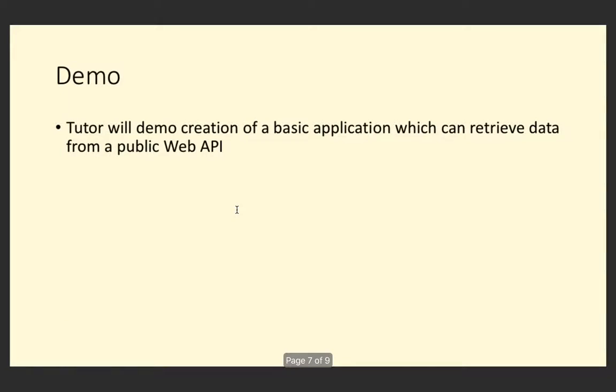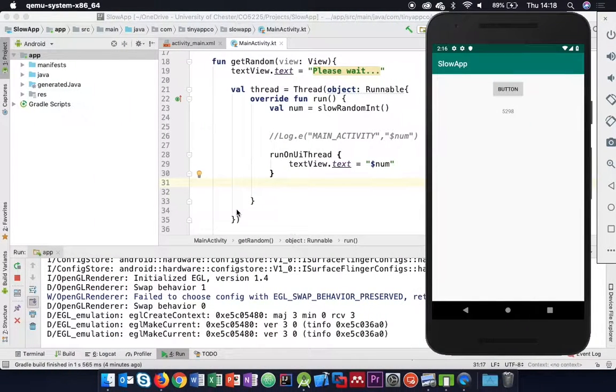I'm going to create a very basic application. There's a character in Parks and Recreation called Ron Swanson - there's an API that gets quotes from him from the show. It's a very simple API to use and the quotes are moderately amusing. We're going to use it to create an application that goes to the API, pulls some data, and puts it inside our application.